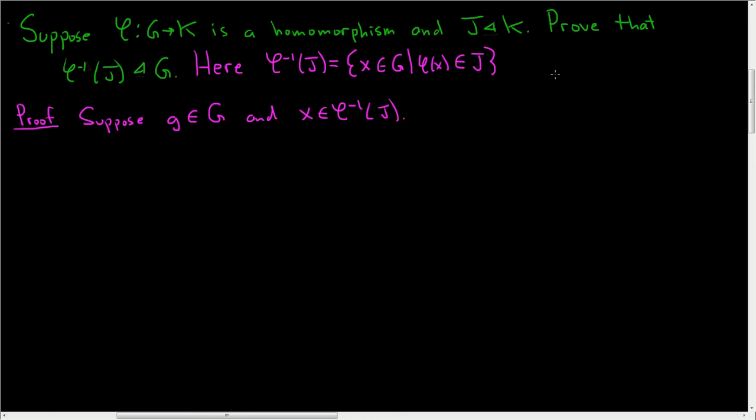So if it's been a while since you've done anything with normal subgroups, let me write down what we need to show over here. We need to show that gXg⁻¹ is in the inverse image of J. And that'll be enough to show that it is actually a normal subgroup of G.